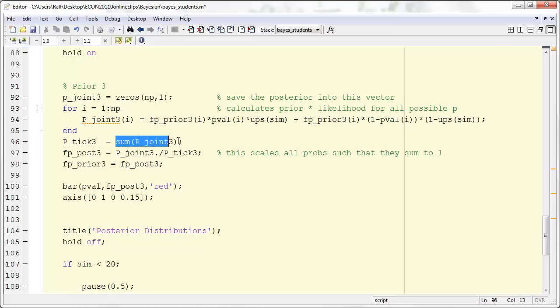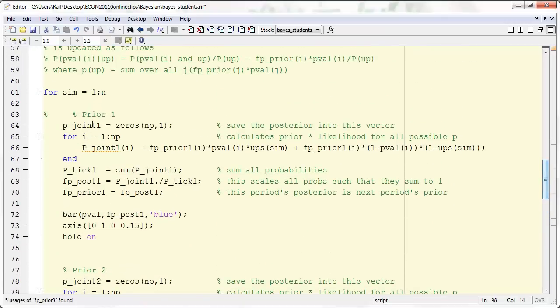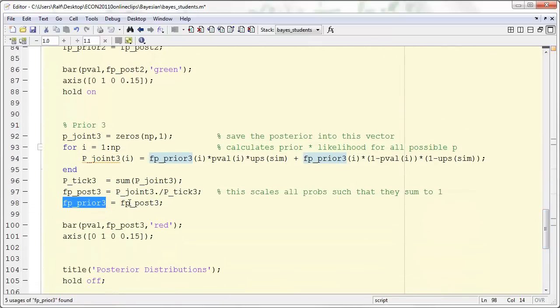And we go through all this loop, and then we have a vector p-joint 3. We calculate the sum of this, and then we do the standardization. When we divide each value in p-joint 3 with that sum, which is p-tick 3, what we get is fp-post 3. p-tick 3 is the sum of all the pp values, and what we get f-post, this will then be put into the prior. So for the next observation for y2, our posterior which we just calculated will be the prior. And that will not be 1 over 101 anymore as you've seen in our table.